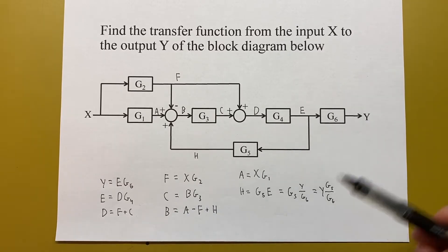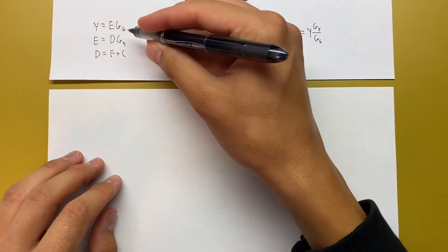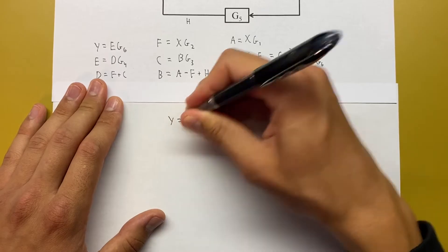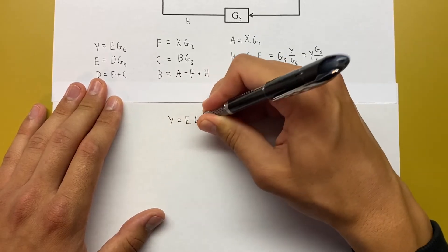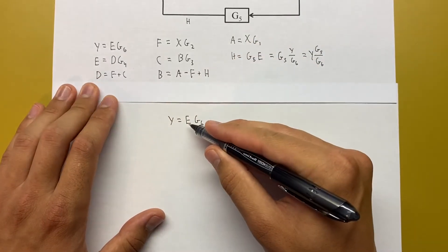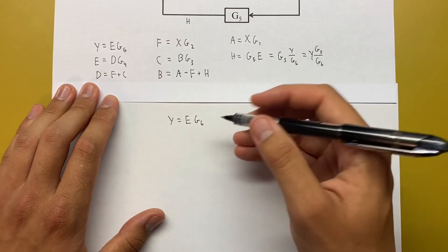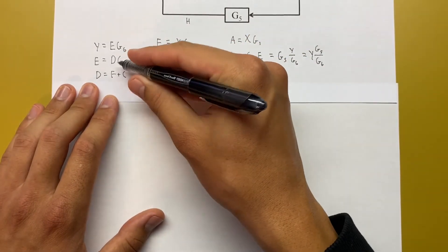Now basically we've got everything so we can reduce it all down to in terms of X, Y, and the G's. Let's start combining some of these. I'm going to start with this first equation, Y equals E G6. We want to get rid of that E since it's not an X, Y, or G. So we'll replace it with E equals D G4.